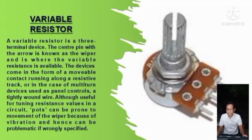A variable resistor is a three-terminal device. The center pin with the arrow is known as the wiper and is where the variable resistance is available. The devices come in the form of a movable contact running along a resistive strip, or in the case of a multi-turn device used as a panel control, a tightly wound wire. Although useful for tuning resistance values in a circuit, the wiper can be prone to movement due to vibration and hence can be problematic.